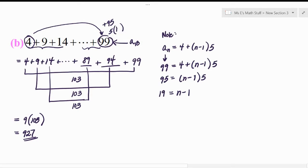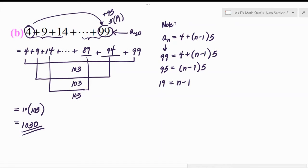Which means it would have been a 19 there. Sorry, everybody. Which means there's 20 terms. Which means if there's 20 terms, there would have been 10 pairs. And you wouldn't have gotten 927. You would have gotten 1030. Okay. Apologies for the mistake there. Anyway, and then you could have gotten that there were 20 terms just by adding one to both sides. So apparently, I should fall back on this method that I don't like as much.